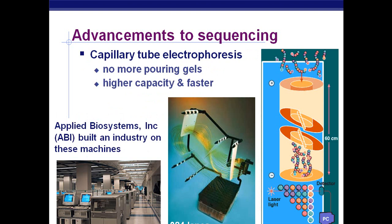An additional advancement is to use capillary tubes — super, super tiny in diameter. Something you might liken it to is the little tiny tubes used when you donate blood at school. By using capillary tube electrophoresis, we don't have to pour gels anymore. They can hold more and run a lot faster. As you can see here, this machine holds the equivalent of 384 lanes. This was built by Applied Biosystems, which built an industry around these machines.